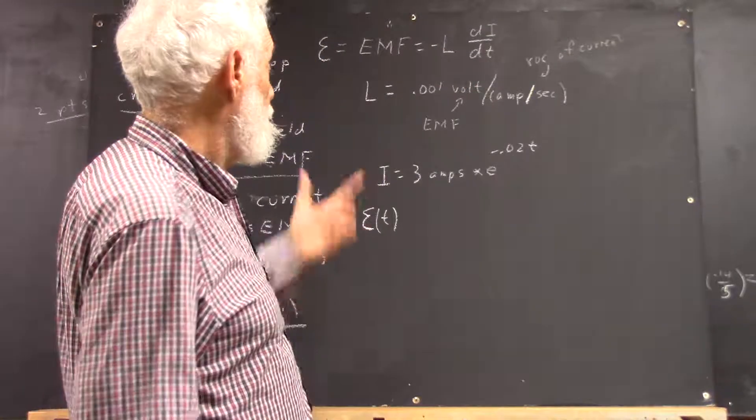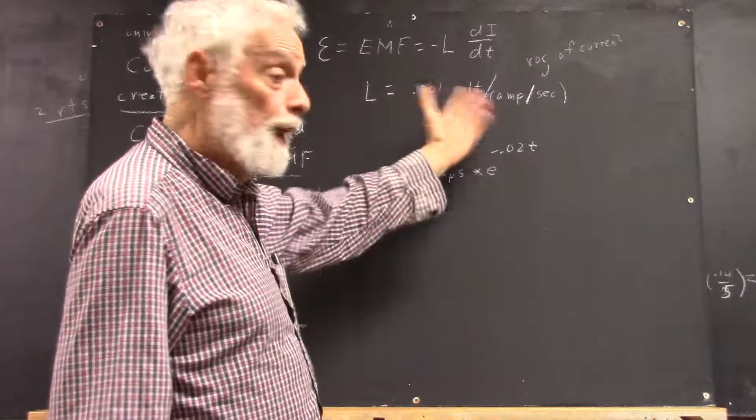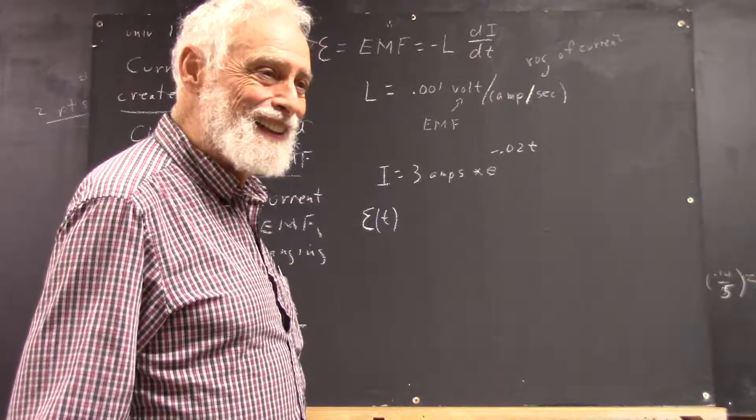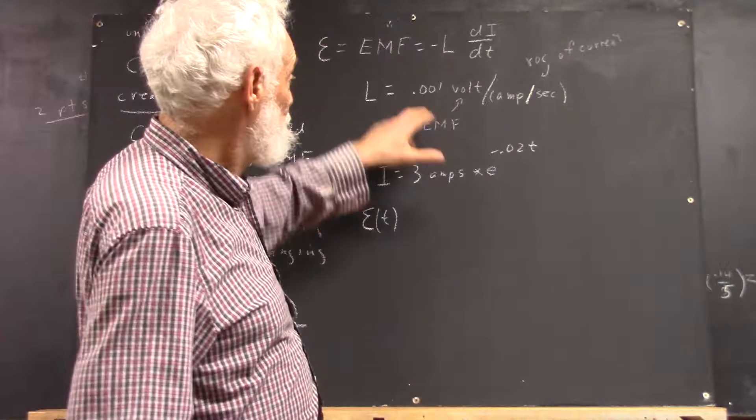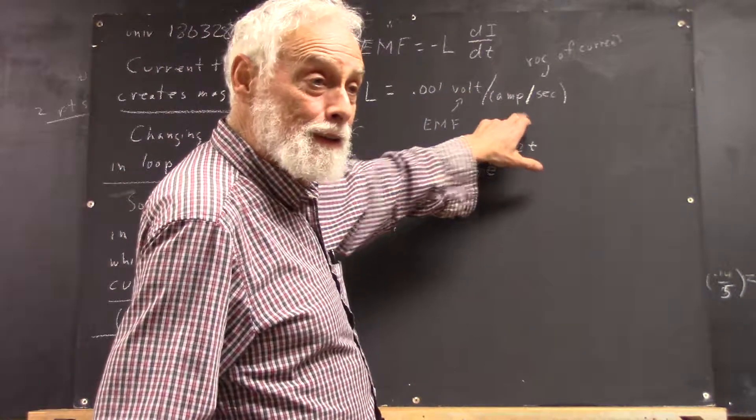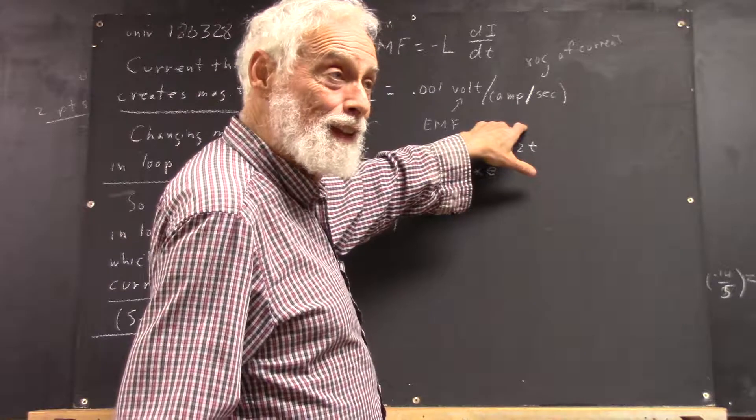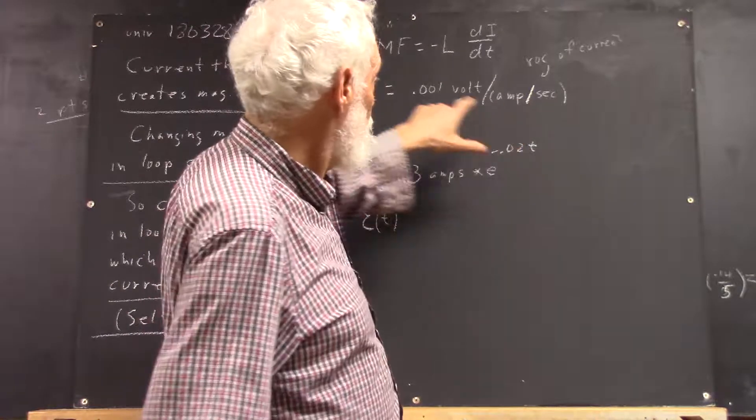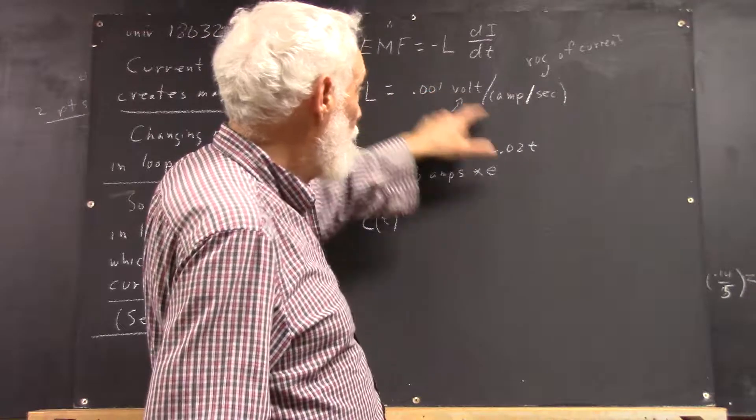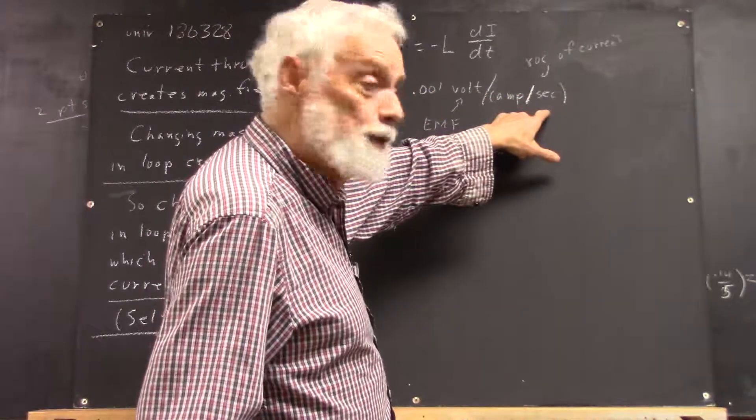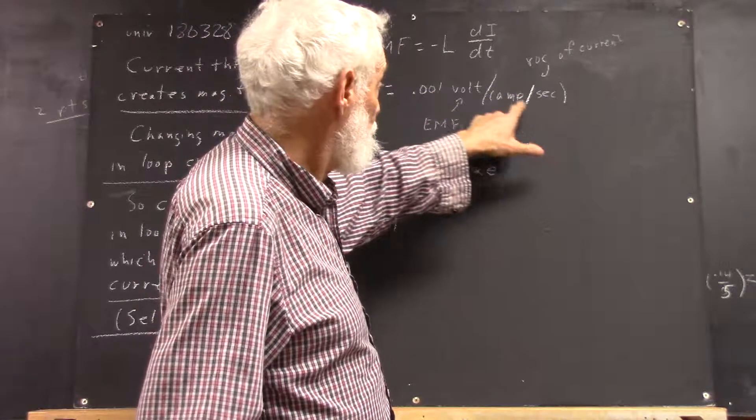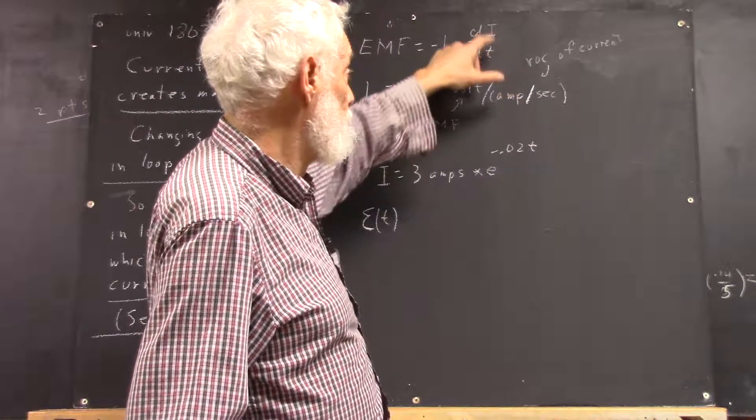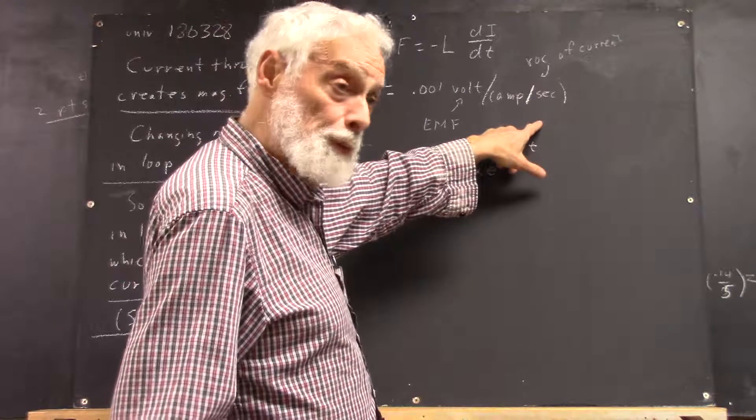So we say that L, now there's a name for this. It's called Henry. But I'm not using that name. I'm using the most direct, unsimplified version that shows you that this is EMF per rate of change of current. Current is amps. The rate of change is amps per second, rate of change with respect to time.